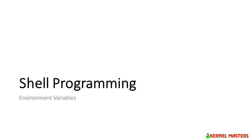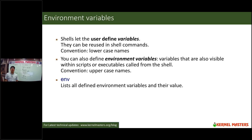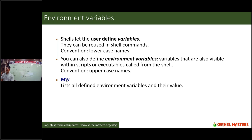Basically, environment variables are of two types in shell programming. One is called a user-defined variable and the second one is called a system-defined variable. User-defined variables are represented in lowercase letters only, but system-defined environment variables are in uppercase. When you run the env command, you can see the list of all running environment variables, whether user-defined or system-defined.